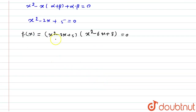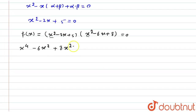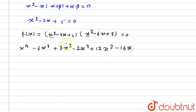Expanding: x squared times x squared gives x to the 4th; x squared times minus 6x gives minus 6x cubed; x squared times 8 gives 8x squared. Then minus 2x times x squared gives minus 2x cubed; minus 2x times minus 6x gives plus 12x squared; minus 2x times 8 gives minus 16x. Then 5 times x squared gives 5x squared; 5 times minus 6x gives minus 30x; and 5 times 8 gives 40.